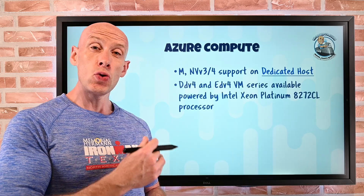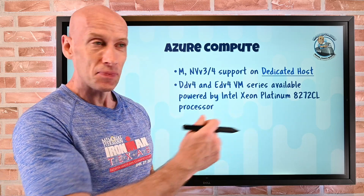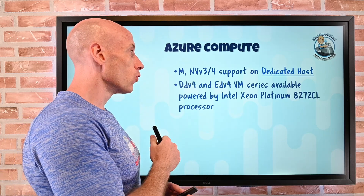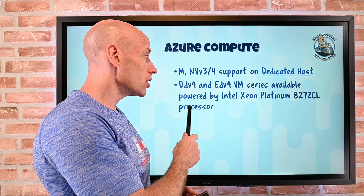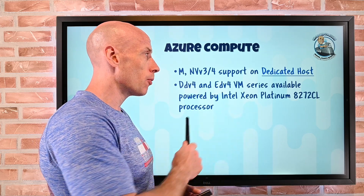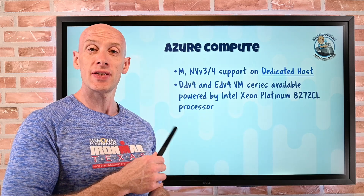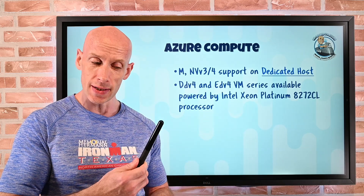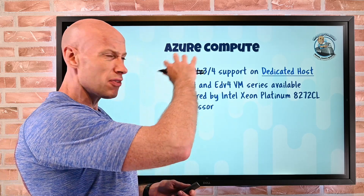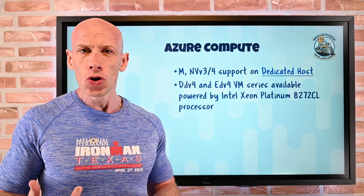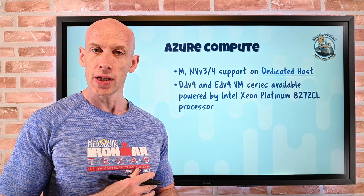Additionally, there are the new DD and ED v4 series virtual machines. These use the new Intel Xeon Platinum 8272CL processors — that's the Cascade Lake — so there are essentially new options for your virtual machines.